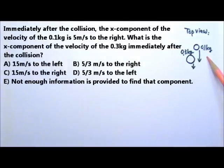Two balls of mass 0.1 kg and 0.3 kg initially moving in the Y direction collide with each other. Immediately after the collision, the X component of the velocity of the 0.1 kg is 5 m per second to the right. What is the X component of the velocity of the 0.3 kg immediately after the collision?